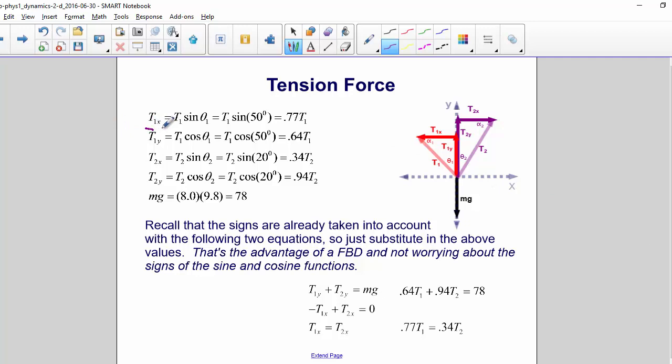So T1x is equal to 0.77 times T1, T1y is equal to 0.64 times T1.